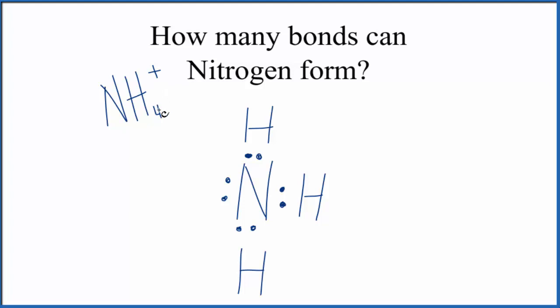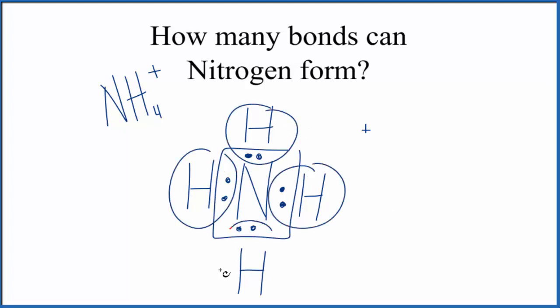NH4 plus is the ammonium ion. What happens is we have a hydrogen ion. This doesn't have any valence electrons. It's going to come over here and share with the nitrogen. That means that this whole thing will now have a positive charge. The nitrogen still has eight valence electrons, but each of these hydrogens has two, so everything is stable.